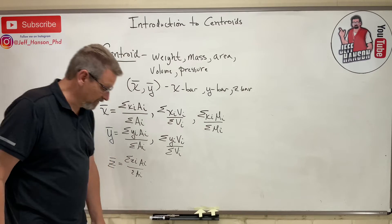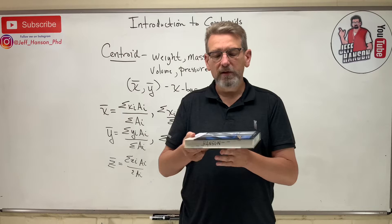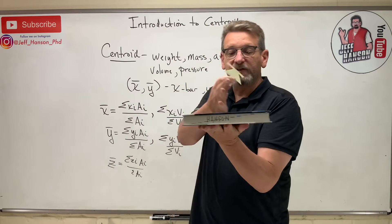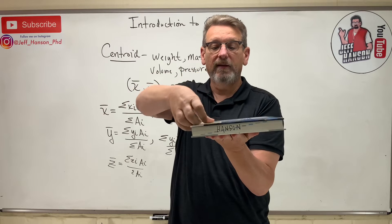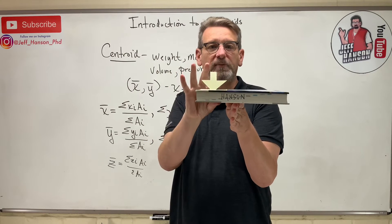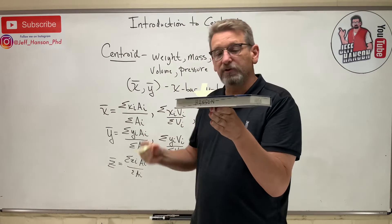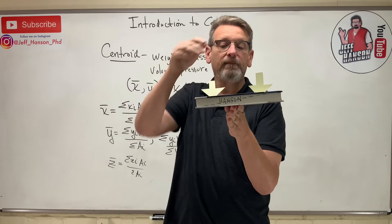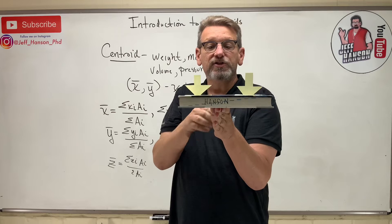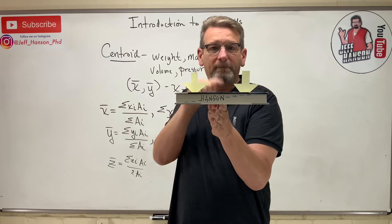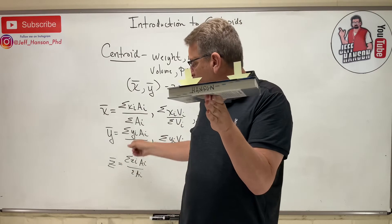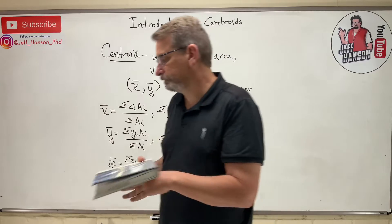These are actually moment equations. If I take my book and try to balance it on my hand, the force on one half of the book is trying to rotate my hand one way, and the force on the other half tries to rotate it the opposite direction. When my hand is right in the middle, those two forces balance — that's the moment, and that's the centroid. The balanced moment tells us where the centroid is.